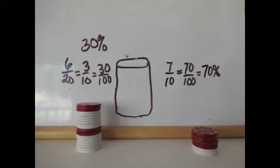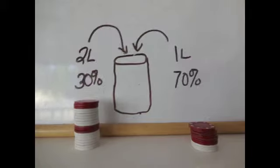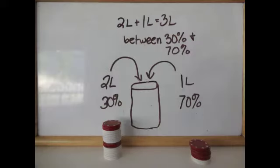On the left, I have 2 liters, and on the right, I have 1 liter. Let's combine them. Think about the two numbers the percentage will be in between. We know the amount will just be the two amounts we've added, so 2 liters plus 1 liter equals 3 liters.